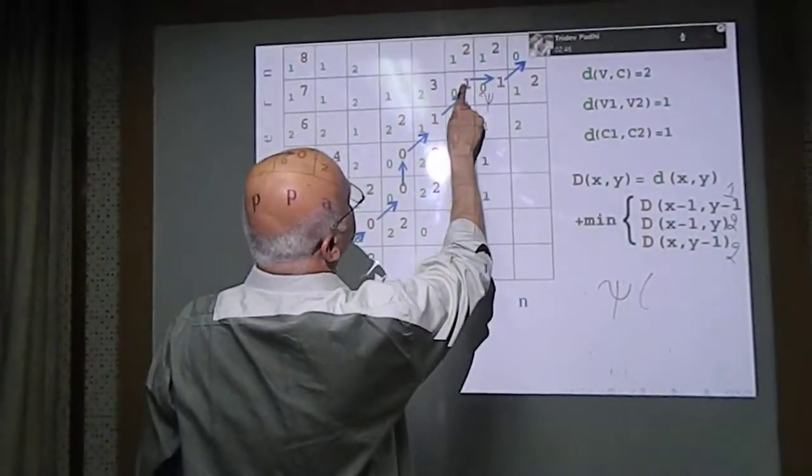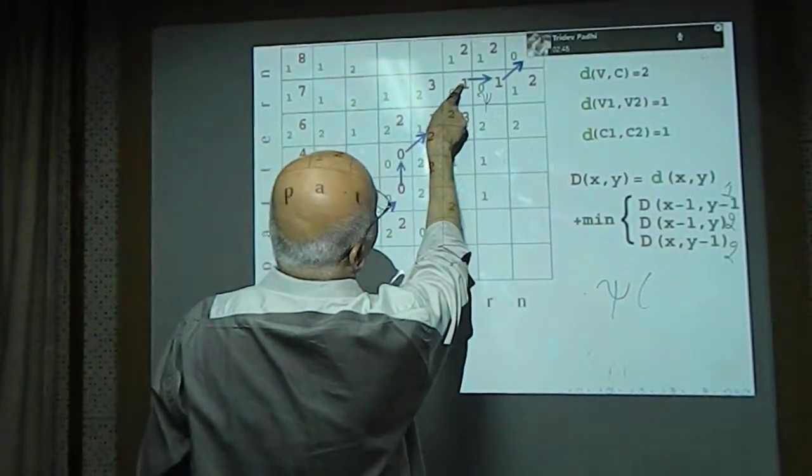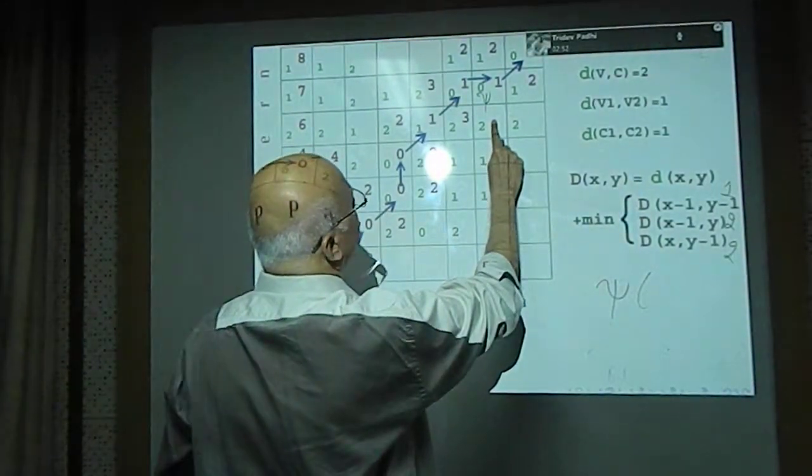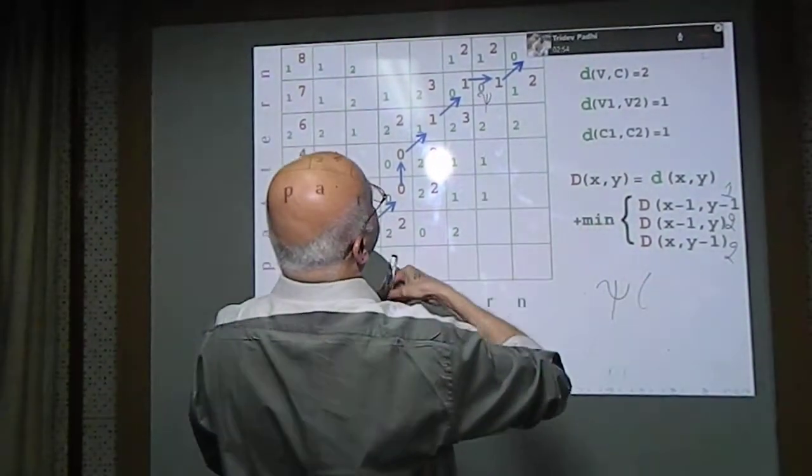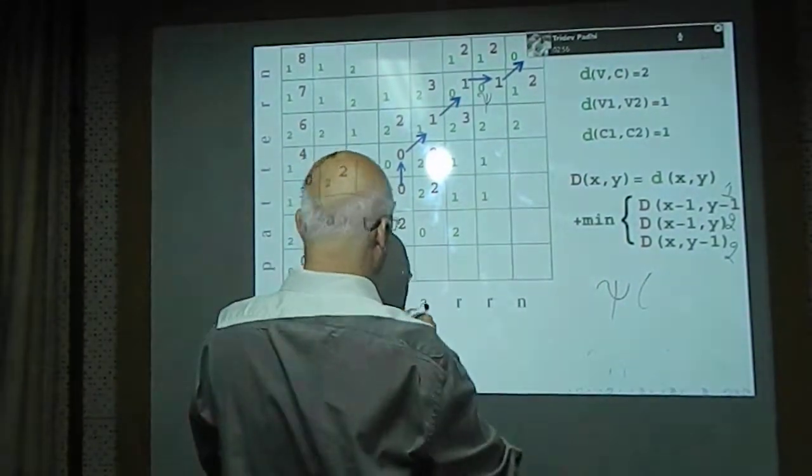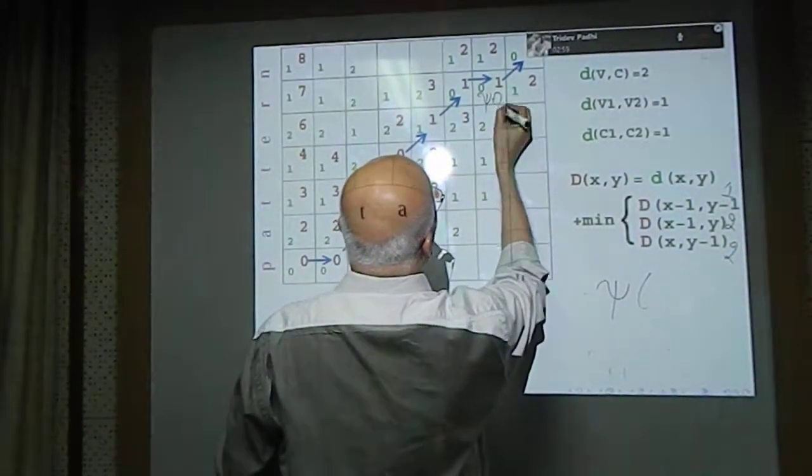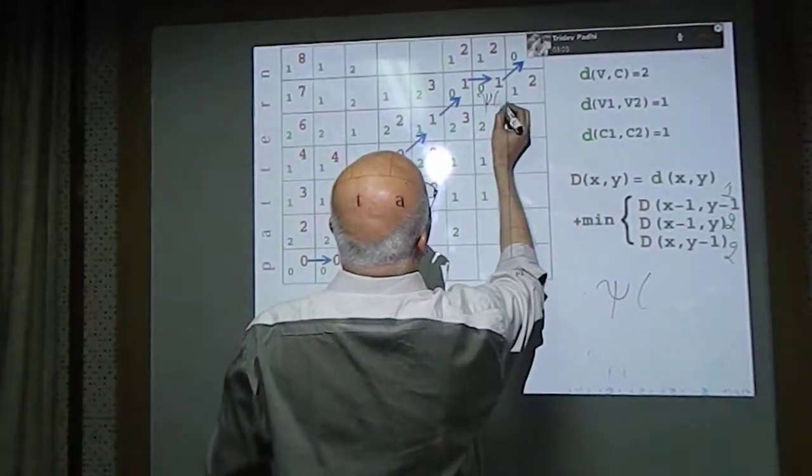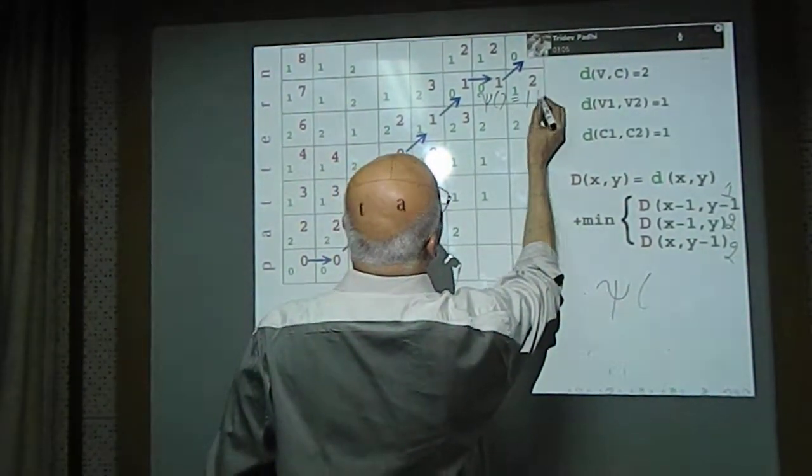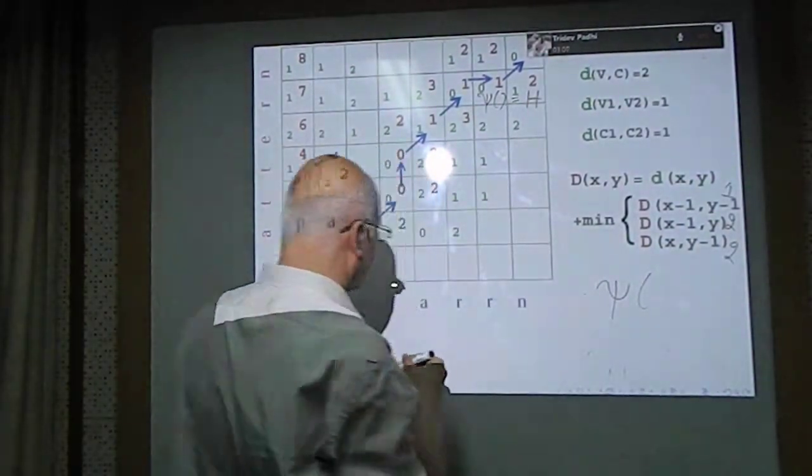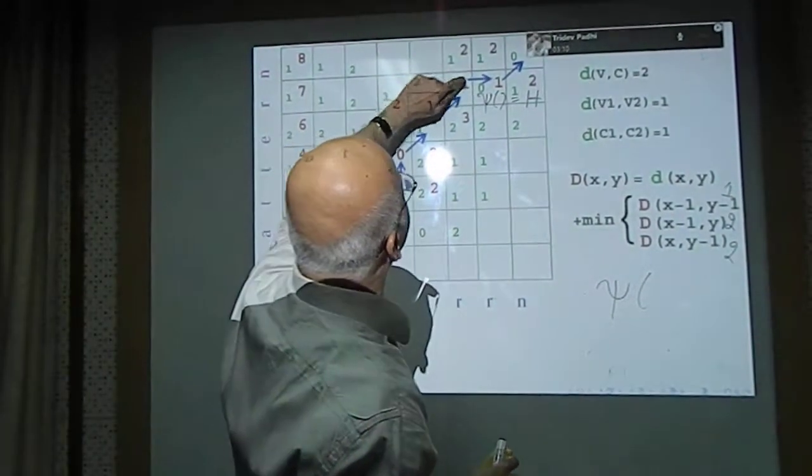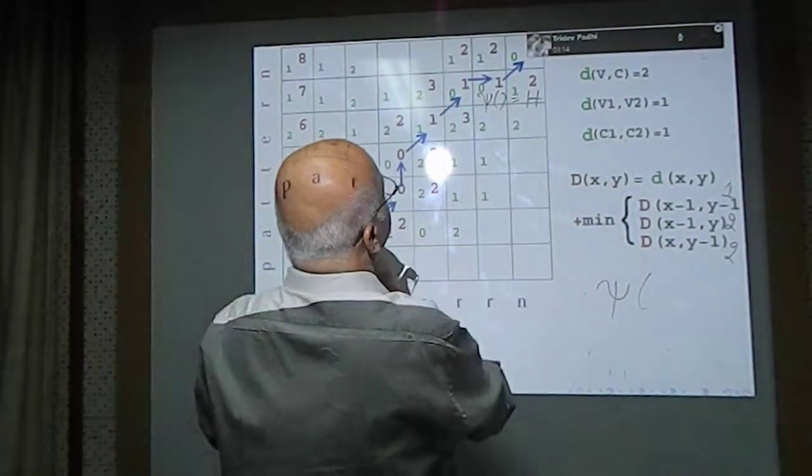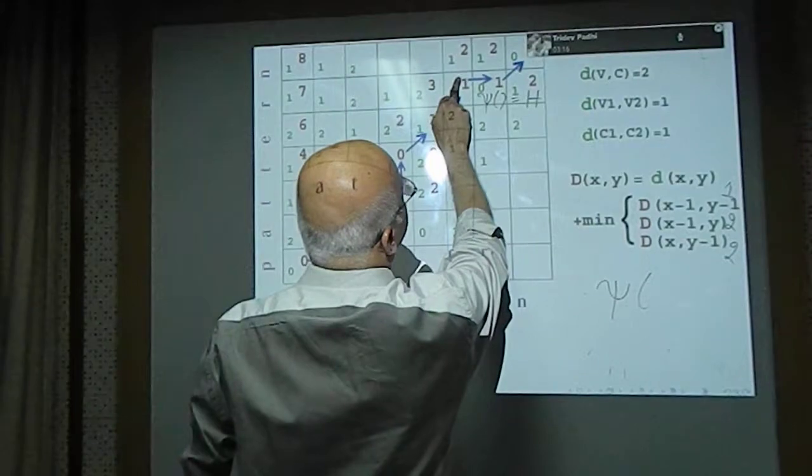We have compared the cost of the capital D of the left cell, the capital D of the diagonal cell, and the capital D of the below cell. It turned out that the capital D of the left cell was the smallest. Therefore, Psi at this point would have a value indicating a horizontal path, meaning we came from the left. We draw a blue arrow to indicate that to this point we came from the left cell.